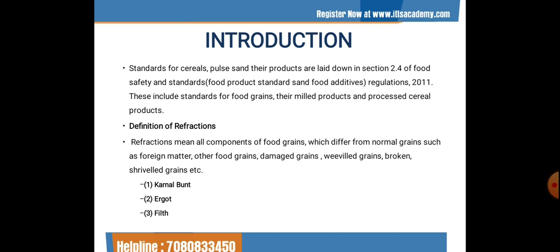As we know, there is a food safety standard for maintaining the standards of food. These standards for cereals, pulses and their products are laid down in Section 2.4 of the Food Safety and Standards Regulation 2011. These include standards for food grain, their milled products and processed cereal products. In addition, standards for malted foods and solvent extracted edible oil seed flours are also included.